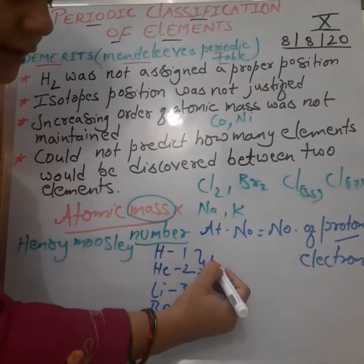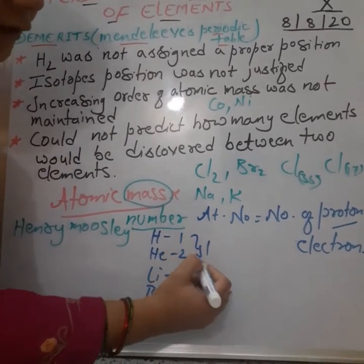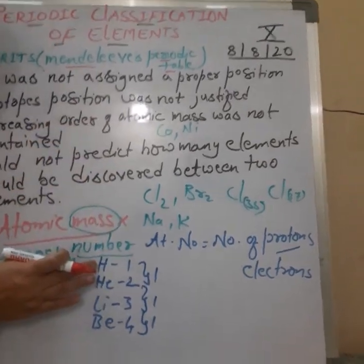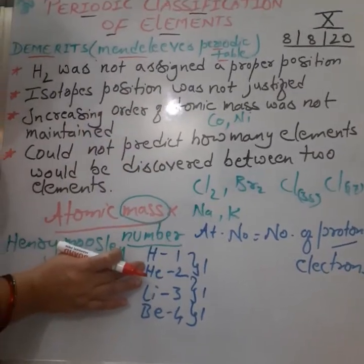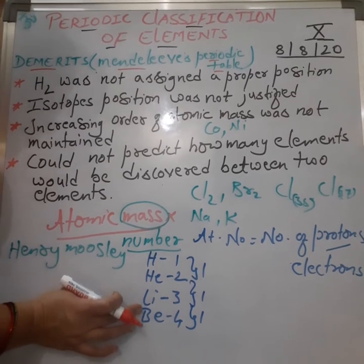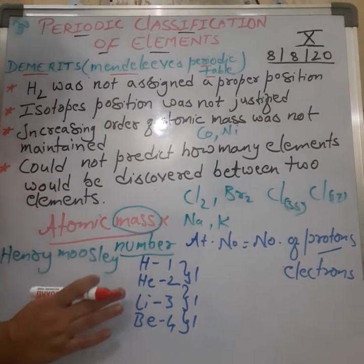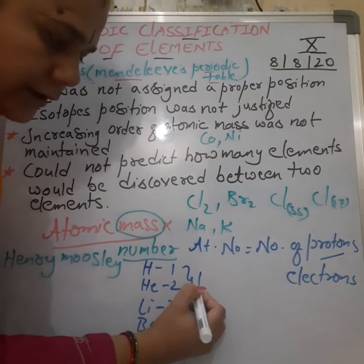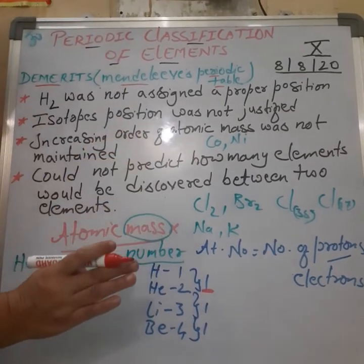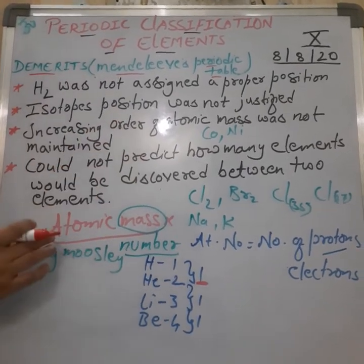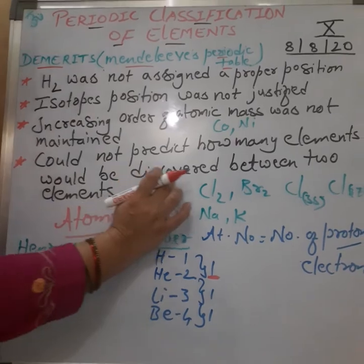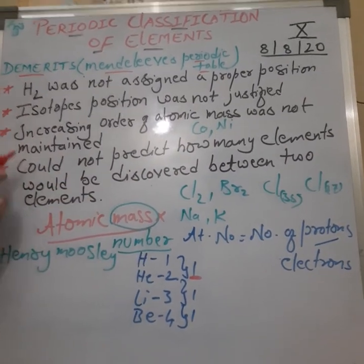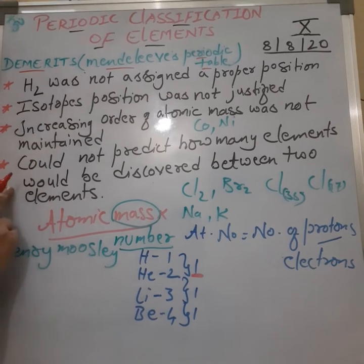The reason is that the difference in atomic number is always 1 — it is fixed, whether from hydrogen to helium, helium to lithium, lithium to beryllium, or beryllium to boron. Since the difference is fixed at 1, we can predict how many elements would be discovered between two elements. So the first anomaly was clarified.